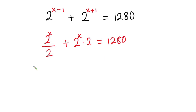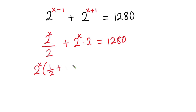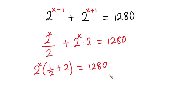Now let's factor 2 to the power x out. We get 2 to the power x, multiplied by the bracket containing one half plus 2, and this is equal to 1280.